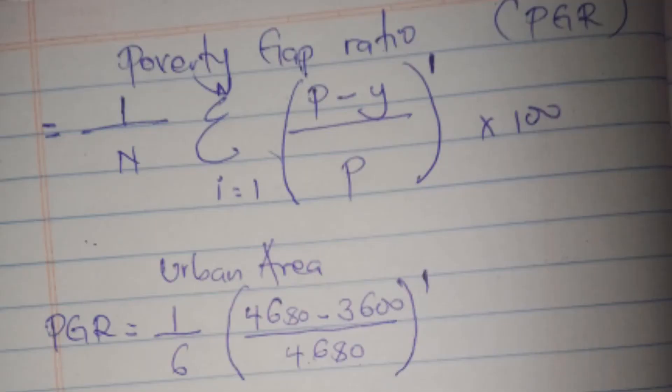We start with the urban area poverty gap ratio. We write the formula: 1 out of n, summation (p minus y) out of p, power 1, times 100. Then we substitute. Our n is the number of individuals and they are 6, so 1 out of 6. In two brackets, p which is the poverty line, 4680.